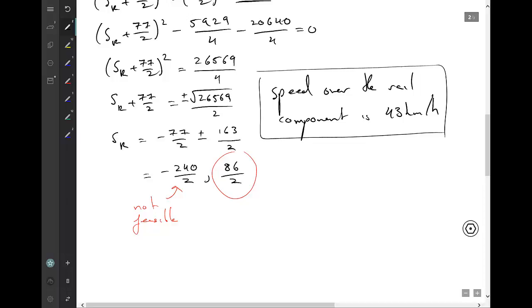Remembering that the speed by sea is 25 kilometers lower. So speed over the sea component, just 43 minus 25, so it's 18 kilometers an hour. And so we finally got there.